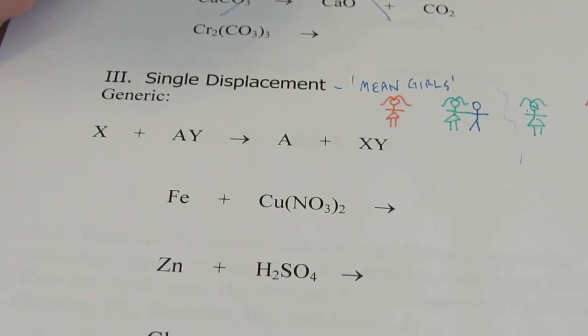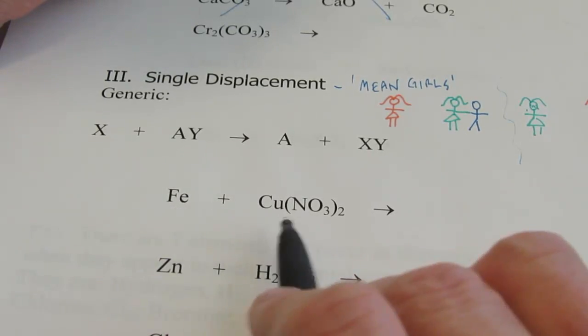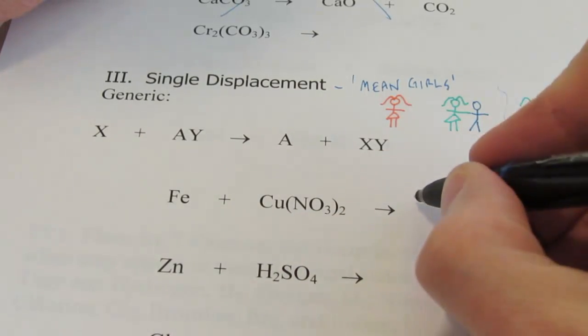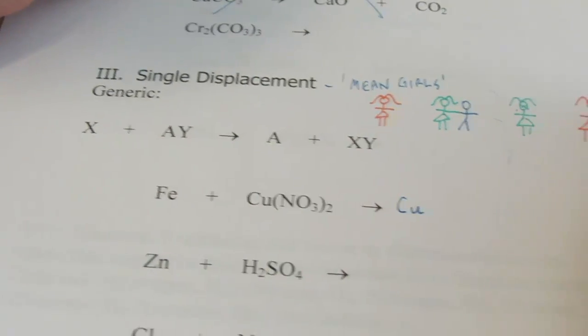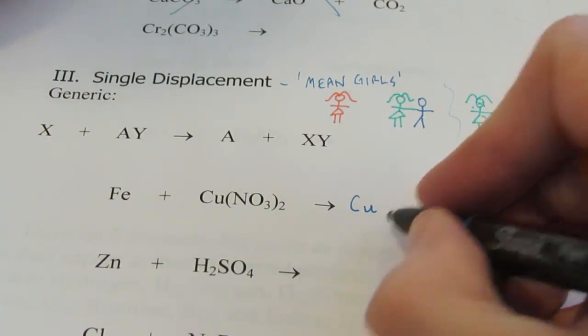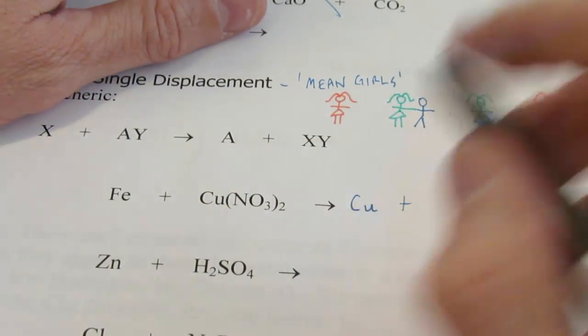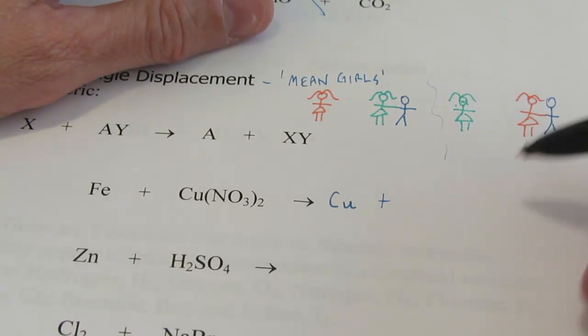So let's take a look at our first example, iron and copper to nitrate. So iron will replace copper. That means copper is going to be all by its lonesome there. I don't need to put a little 2 after it. It's not one of my diatomics. And iron will get together with nitrate.